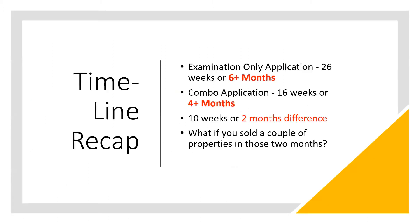The recap: the examination-only approach takes about a little over six months. If you do the combo system, it could take a little over four months — about a two-month difference. So what would happen if during those two months you were able to sell a house? In some areas there are million-dollar homes. You could easily be out $10,000 in lost commissions because you were delayed getting into the business by two or more months. That can be an expensive mistake.